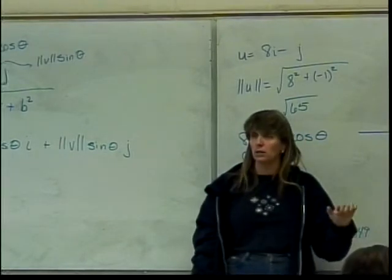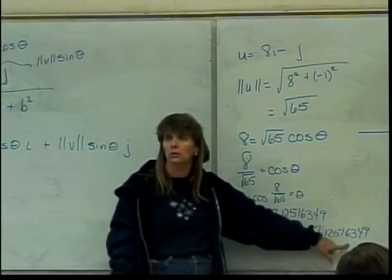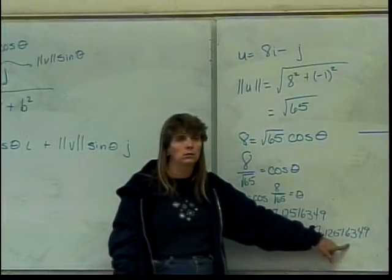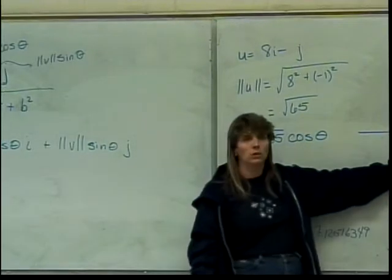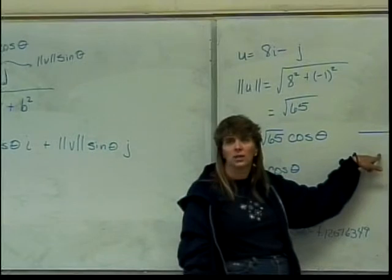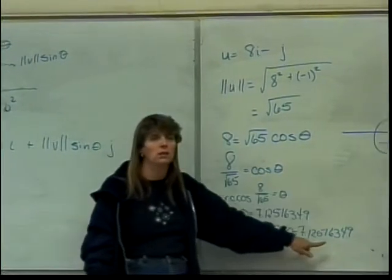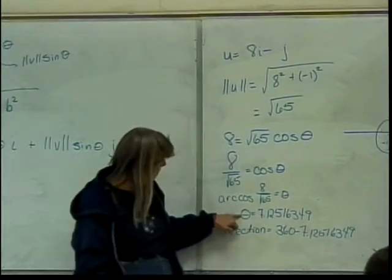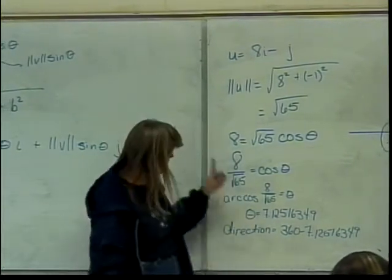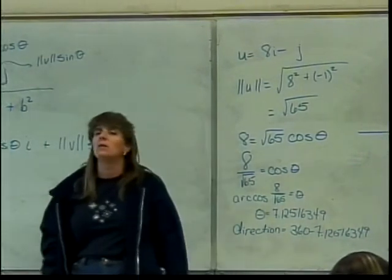For quadrant 3 or 4, it turns out we get to do exactly the same thing. What did I do here? Well, I did 360 minus the angle. That's going to work in quadrant 4. And it's also going to work in quadrant 3. So if you're in quadrant 3 or 4, you always do 360 minus the arc cosine of the theta that you got. Excuse me, the arc cosine of this thing. So, minus your theta to get your direction.